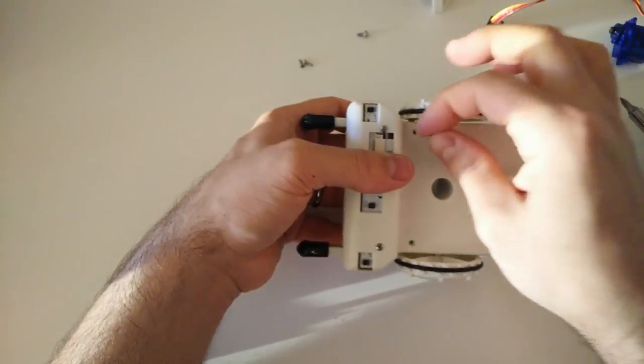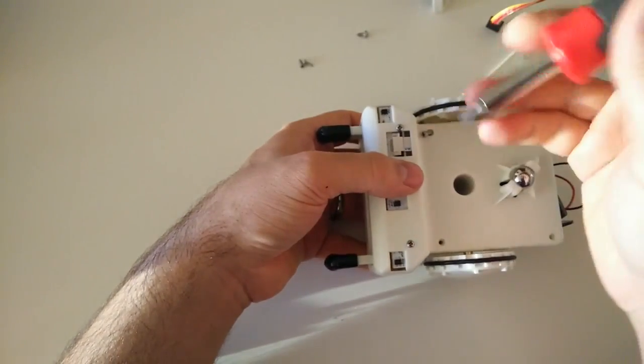Once all the parts are aligned, it should pop together smoothly. At that point, you can put back in the front two screws.